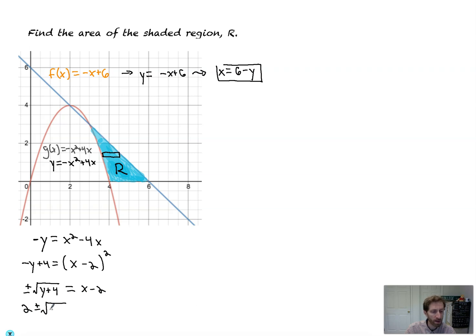Equals x minus 2. And then we add 2 to both sides. So you get 2 plus or minus the square root of y plus 4 equals x. And what I'm going to do on this one, guys, is I'm just going to set up but not evaluate it. We're just going to set up the integral. We could evaluate. We'll use our calculator on it, I guess.